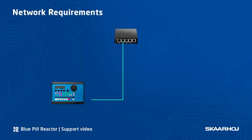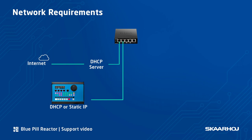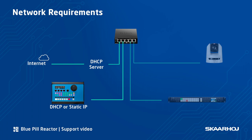First, a word on network requirements. BluePill products are network based and leave the factory with IP set to DHCP. For this reason we recommend you have a DHCP server in your network for initial setup. After this you're free to use a static IP address instead. Also, internet access is needed when downloading software updates and device cores. And finally, BluePill must be in the same IP range as the devices it's controlling, and the cameras, video switches and so on must have static IP addresses in order to connect to them.